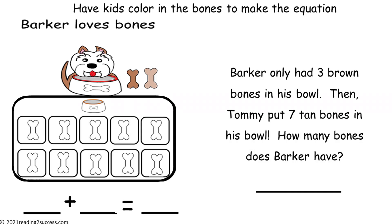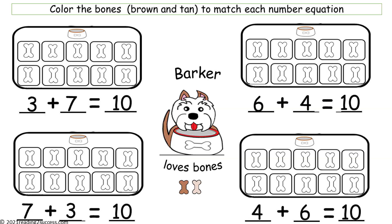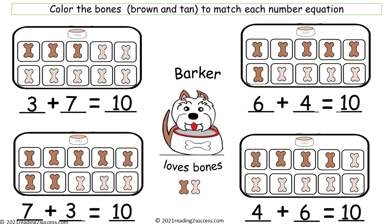Read the word problem with kids: Barker only had 3 brown bones in his bowl, then Tommy put 7 tan bones in his bowl. How many bones does Barker have? Have kids cut out the bones and place them on the 10 frame to make the equation. This is a completed example: 3 brown bones plus 7 tan bones equals 10 bones. A second option is to have kids color in the bones to make the equation. Now have kids color the bones to match each number equation: 3 brown plus 7 tan equals 10; 6 brown plus 4 tan equals 10; 7 brown plus 3 tan equals 10; and 4 brown plus 6 tan equals 10.